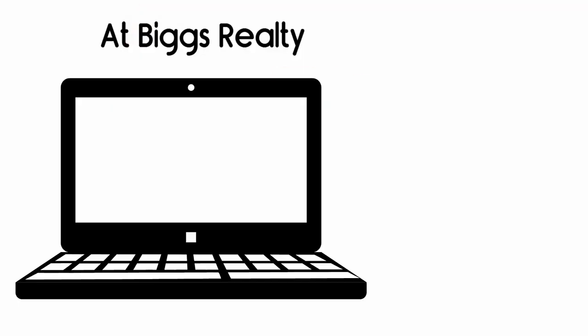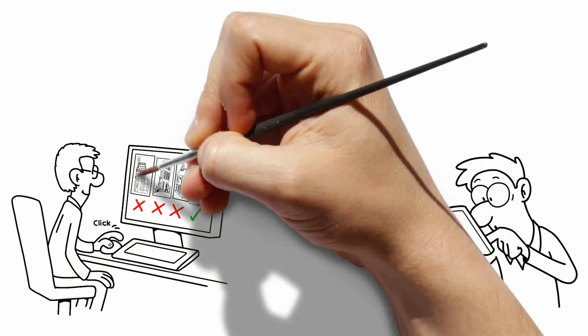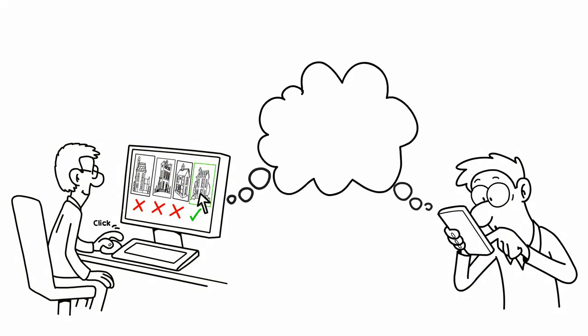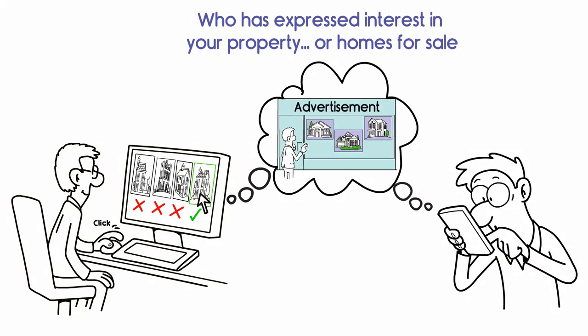At Biggs Realty, we leverage the world's most advanced artificial intelligence remarketing software to make sure that anyone with a cell phone or computer who has expressed interest in your property or homes for sale that are similar to yours will continue seeing advertisements of your home online.